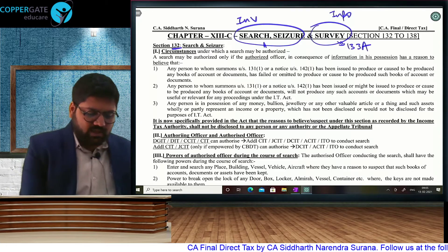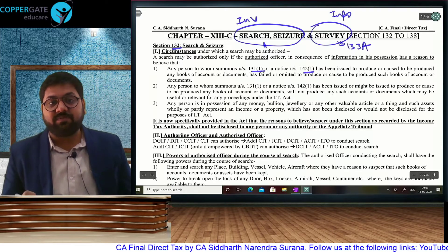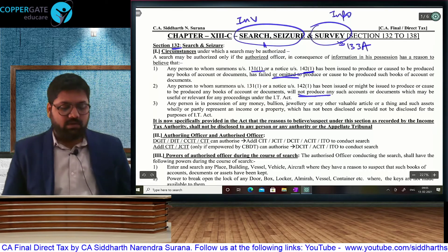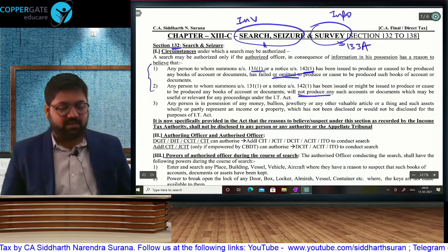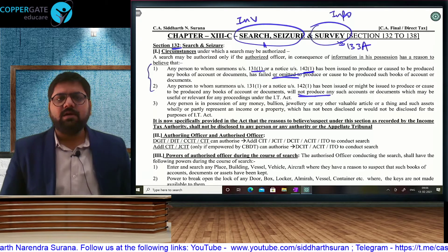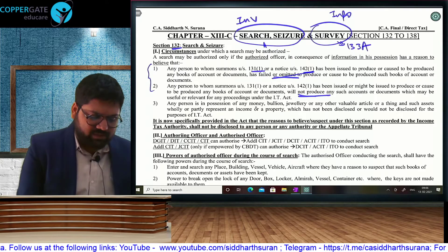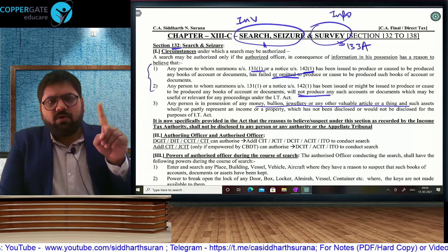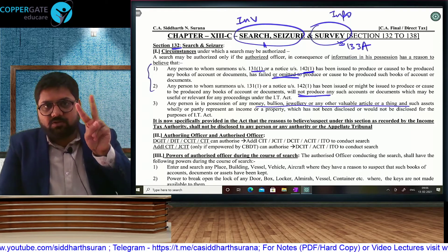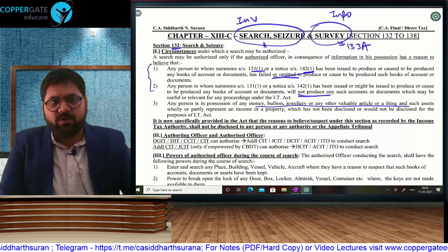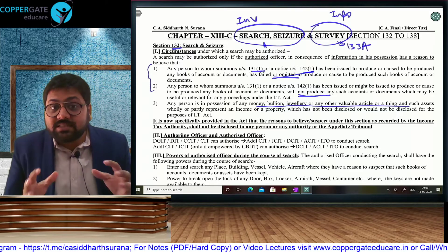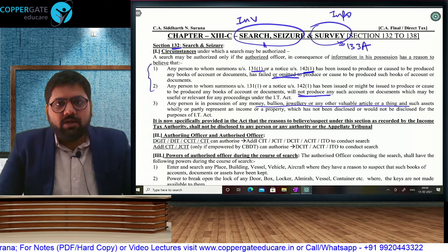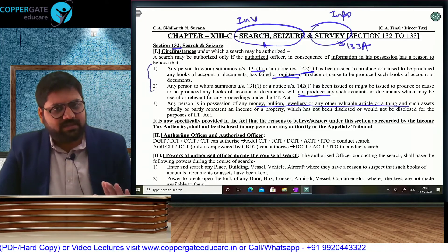Regarding search and seizure: first, if a summons under Section 131 or a notice under Section 142(1) has been given to file ROI and you have not responded or will not respond, then a search can be conducted. But in real life, a better option is best judgment assessment. So search will really be conducted when there is information that the assessee has got undisclosed money, bullion, jewelry, or valuable article or thing. What is sufficient information? Not defined. But what is definitely not sufficient? Per the Supreme Court judgment in Ajit Jain, information received from a central government agency such as CBI will not be considered as valid information.